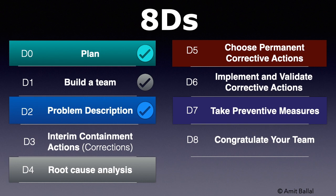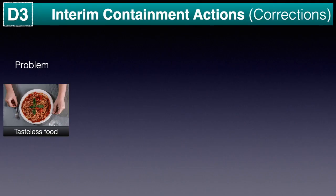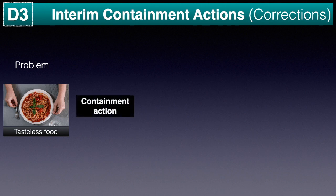For example, let's assume a restaurant is receiving multiple complaints regarding the taste of the food. The restaurant owner has to solve the problem in order to retain existing customers and prevent the restaurant from closure. But he can't close the restaurant until the problem is resolved. Hence he will need to take containment action to correct the problem temporarily, and he will need to take two types of containment actions.